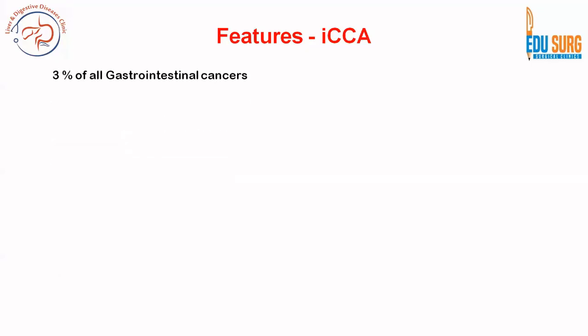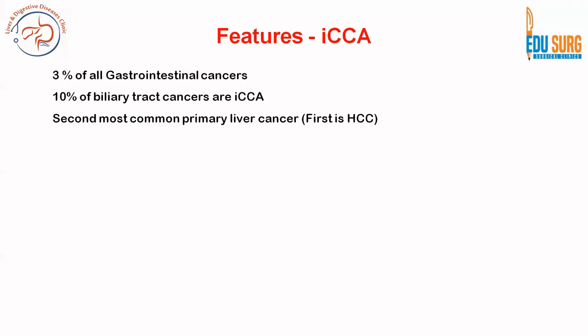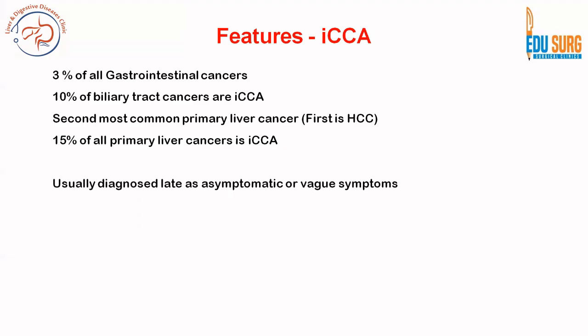Regarding features of intrahepatic cholangiocarcinoma — how it presents clinically and the commonly asked data points you need to remember: it represents 3% of all gastrointestinal cancers, whereas 10% of biliary tract cancers are intrahepatic cholangiocarcinoma. When asked the most common primary liver cancer, it is HCC. The word 'primary' is very important — if asked the most common liver cancer, it is liver metastasis. The second most common primary liver cancer is intrahepatic cholangiocarcinoma, representing 15% of all primary liver cancers.